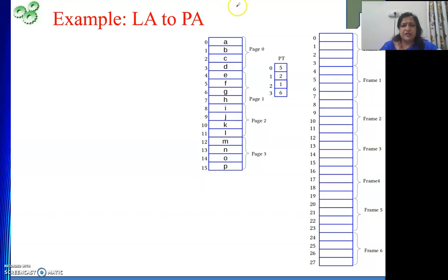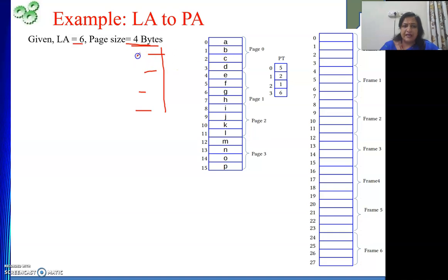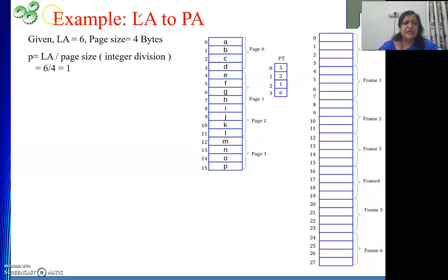For an example: suppose a process has 4 pages (page 0–3), and the page table indicates which frames each page occupies. The processor generates logical address 6, and page size is 4 bytes. To represent 4 bytes, 2 offset bits are needed (values 0–3). From address 6, we extract the page number and offset. The full example of getting page number and offset from this logical address will be explained in the next video. Thank you.